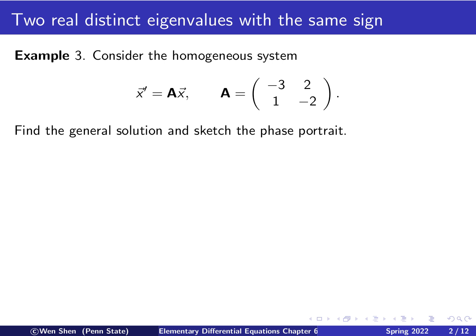Let's take an example. Consider the following homogeneous equation: x prime equals A times x, where x is a vector of length 2, and the A matrix is the following: negative 3, 2, 1, and negative 2. We wish to find the general solution and to sketch the phase portrait.